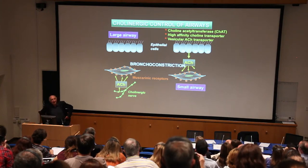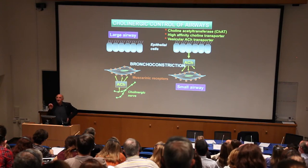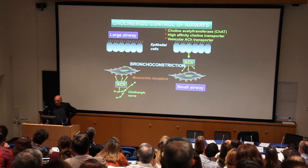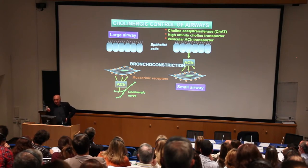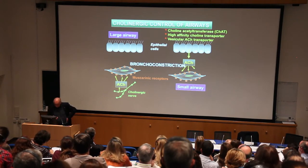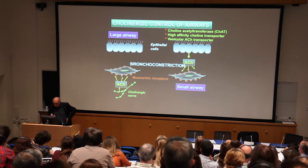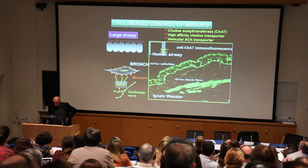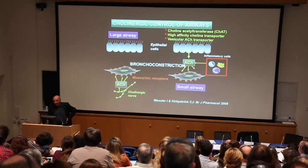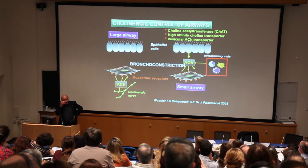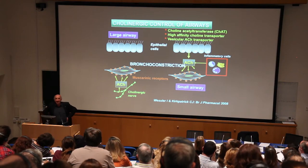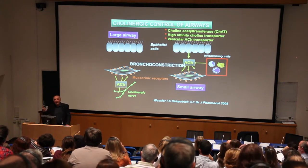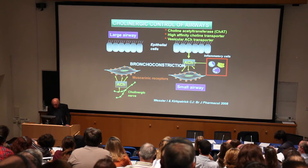We now know that acetylcholine is made by several types of cell in addition to cholinergic nerves. For example, airway epithelial cells contain all the machinery necessary for making and releasing acetylcholine. The key enzyme for synthesizing acetylcholine is choline acetyltransferase, which is expressed in epithelial cells of human airway. Inflammatory cells like neutrophils, macrophages, and T cells can also make and release acetylcholine. So in the periphery of the airway there's a cholinergic tone coming not from nerves but from non-neuronal mechanisms.